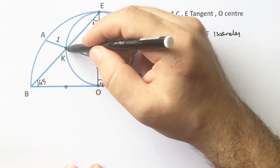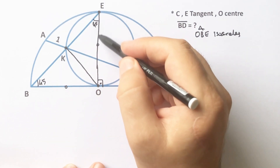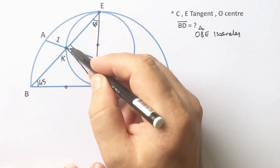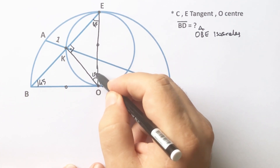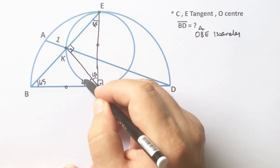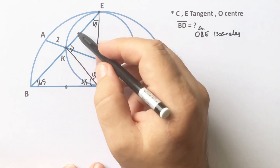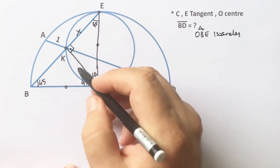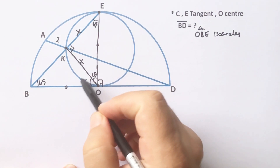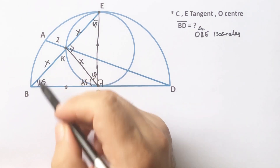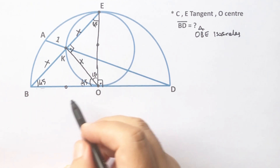Let's connect K and O like this. Notice that this length is the diameter, which means this angle must be 90 degrees. Then this angle must be 45 degrees and here is also 45 degrees. Let's call this length x units — here must be x units, and the side opposite the 45 degrees equals x, so the hypotenuse must be x√2.